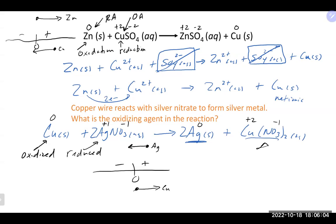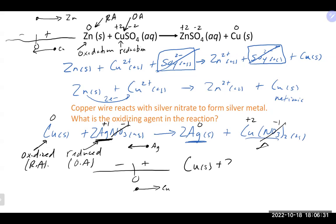The oxidizing agent is the silver — it goes from +1 to 0 and is being reduced. The copper is the reducing agent — it is being oxidized. The nitrate is a spectator ion; nothing is happening with it throughout the reaction.